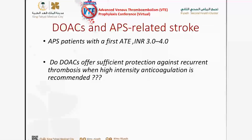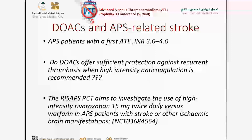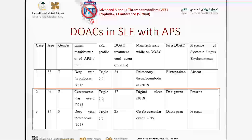What about DOACs and stroke — do they offer sufficient protection against recurrent thrombosis when high-intensity anticoagulation is recommended? The RISPAS trial, an RCT using high-intensity rivaroxaban 15 mg twice daily versus warfarin, is now recruiting patients. Until we get the answer from this study, it is not recommended to use DOACs in patients with arterial thrombosis.